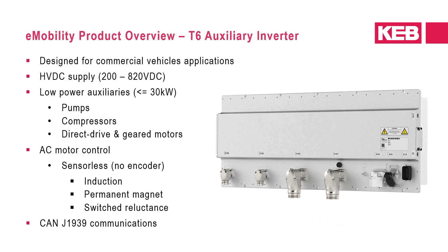The T6 Auxiliary Inverter is a product specifically designed to meet the requirements of commercial vehicle applications. The T6 is an inverter system supplied by a high voltage DC source for controlling high voltage, low power AC motors powering vehicle auxiliaries such as pumps, compressors, and other motor-driven equipment. All types of AC motors are supported, including induction, permanent magnet, and synchronous reluctance motors, all operable with sensorless motor control. The system also supports CAN J1939 communications.